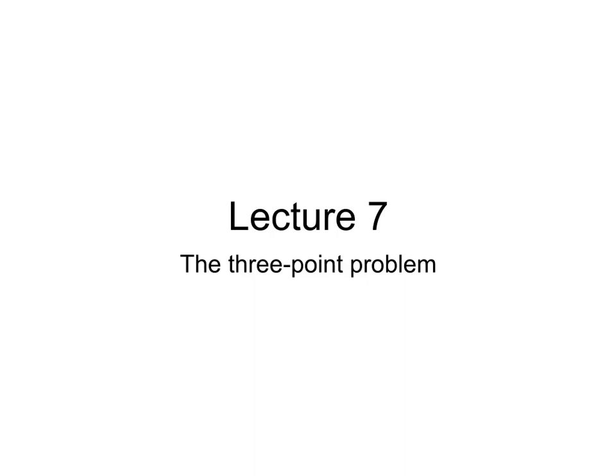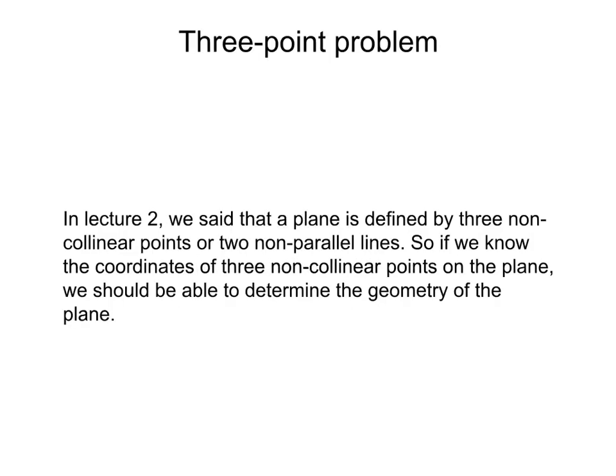Lecture 7: The Three-Point Problem. In Lecture 2, we said that a plane is defined by three non-collinear points or two non-parallel lines. So if we know the coordinates of three non-collinear points on a plane, we can determine the orientation of the plane. This is called the three-point problem and is one of the classic laboratory problems in undergraduate geology.